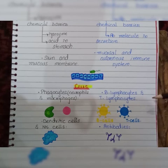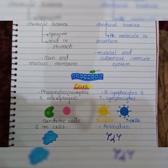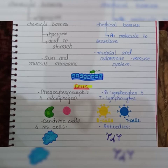B lymphocytes help in antibody production. T lymphocytes come in two types: CD4-positive or helper T cells, which help B cells and aid in cytokine production, and CD8-positive or cytotoxic T cells, which help in cytotoxic activity and the formation of apoptosis of cells, and also help in the production of antibodies.